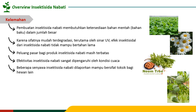Ada beberapa senyawa insektisida nabati yang dilaporkan bisa bersifat toksik bagi hewan lain, terutama jika mekanisme dari senyawa insektisida nabati tersebut adalah racun saraf. Senyawa dari tumbuhan tertentu seperti tembakau yang bersifat racun saraf pada serangga kemungkinan juga dapat berpotensi toksik bagi hewan lain, karena yang dipengaruhi adalah sistem saraf.